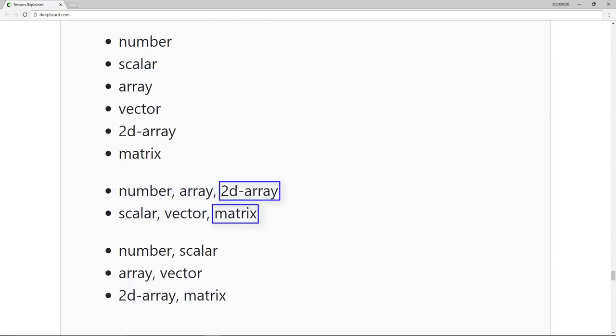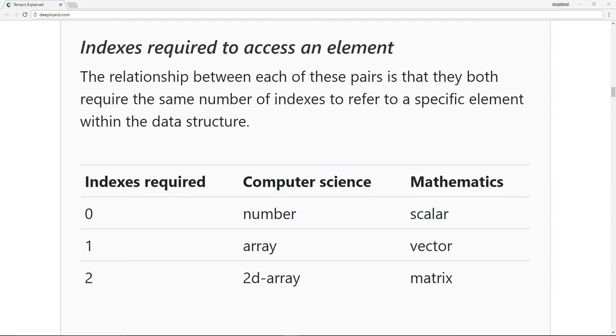To show this correspondence, we can reshape our list of terms to get three groups of two terms. The relationship within each of these pairs has to do with the number of indices required to access a specific element. There are zero indices required for a number and a scalar because you just refer to the actual number or scalar value. You don't need an index.